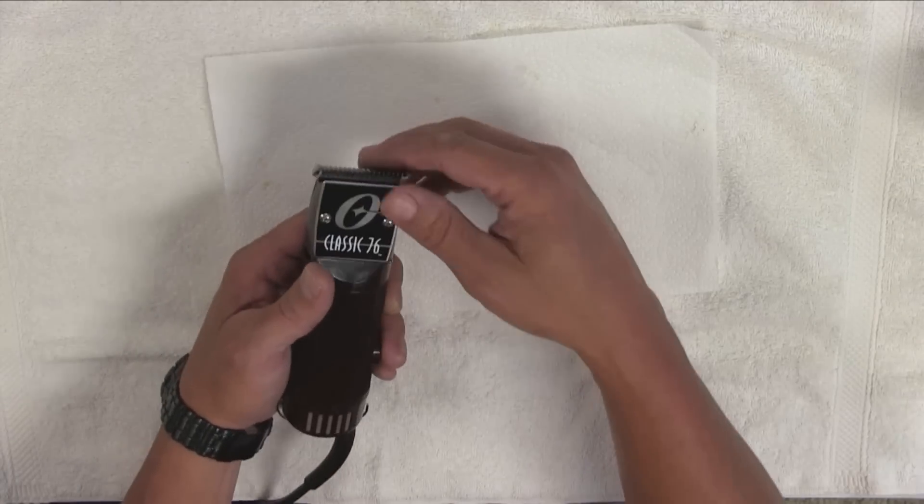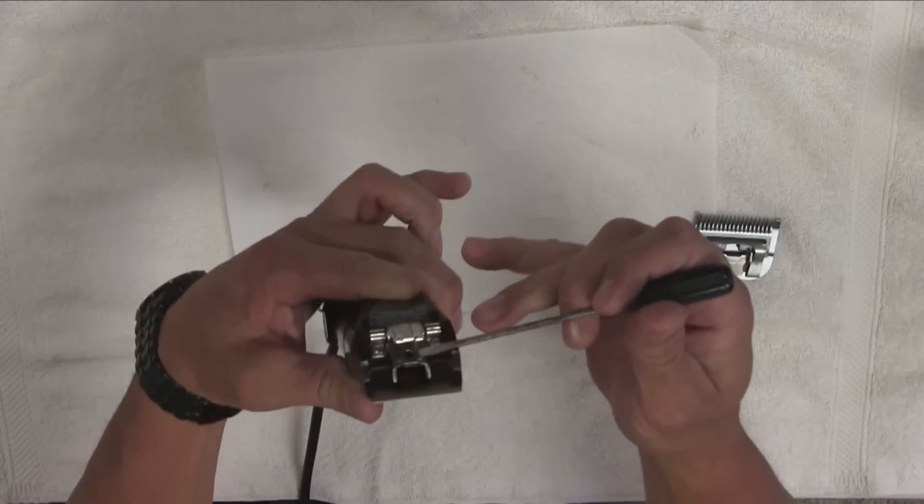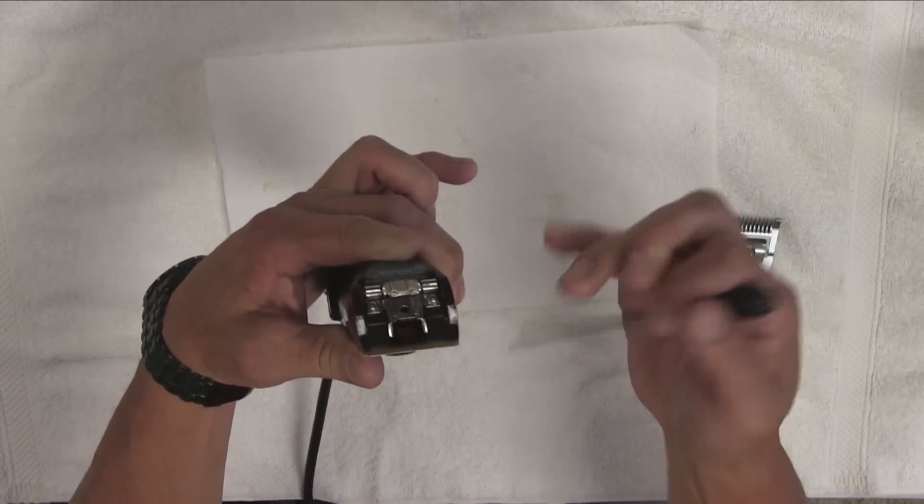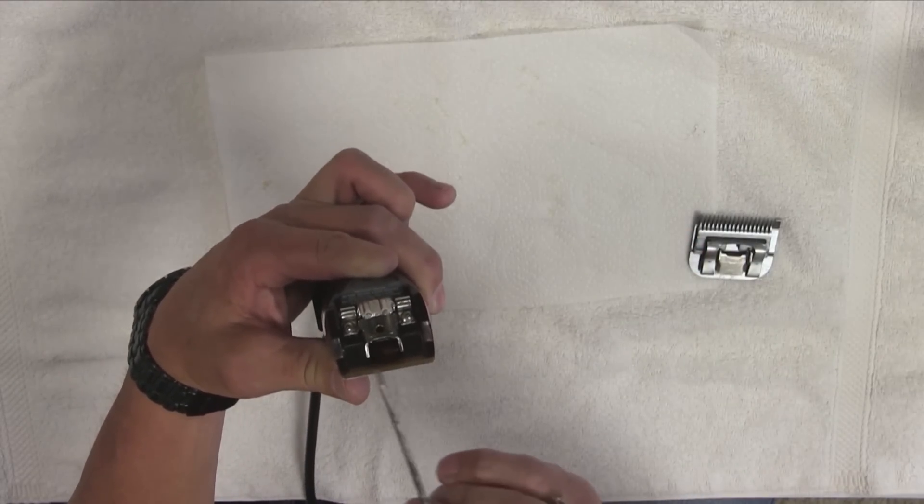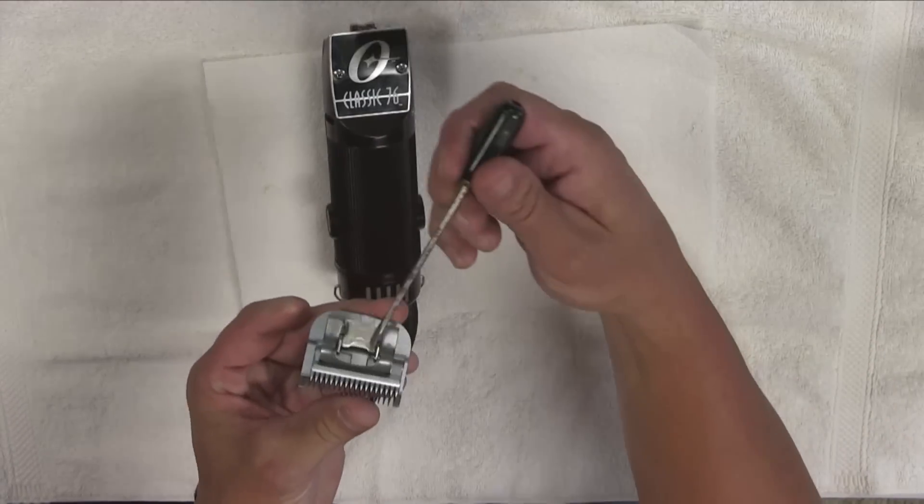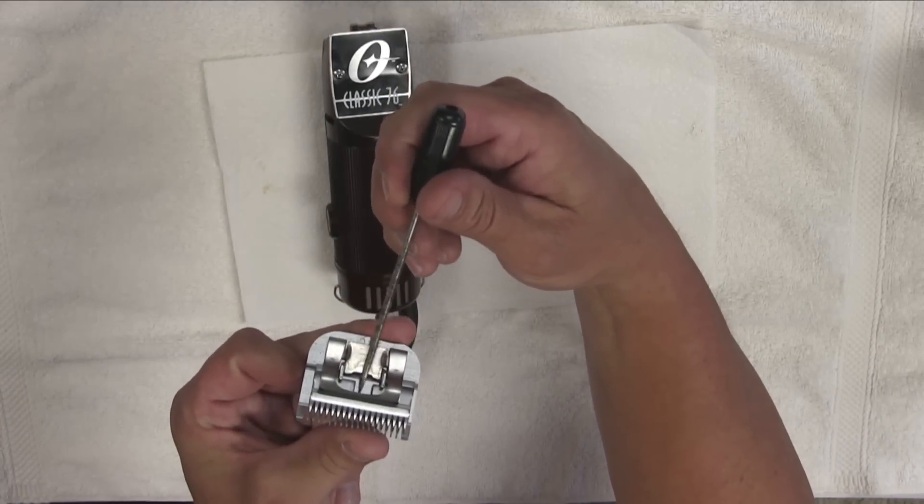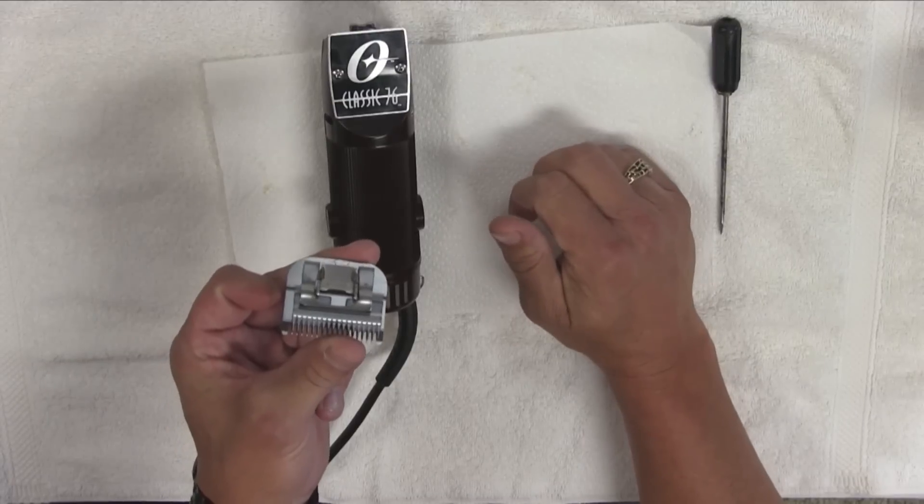And the reason you want to do that is this lever right here that moves back and forth, it will always stop in a different place. It never stops in the same place twice. It moves back and forth. If it is not properly lined up with this slot right underneath here on the moving blade, when you put it on, it may fall in very hard.